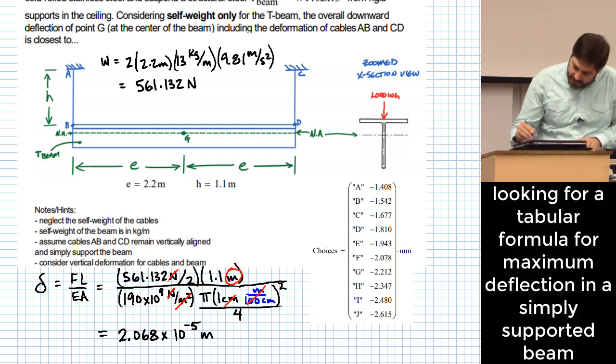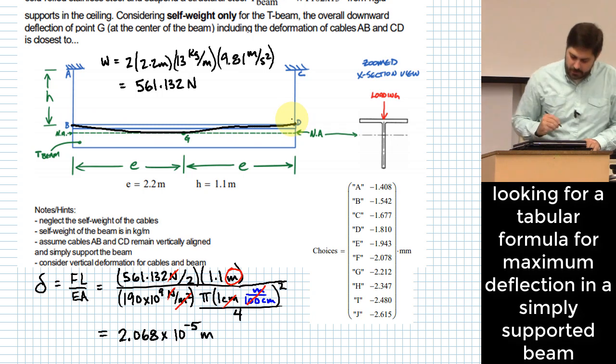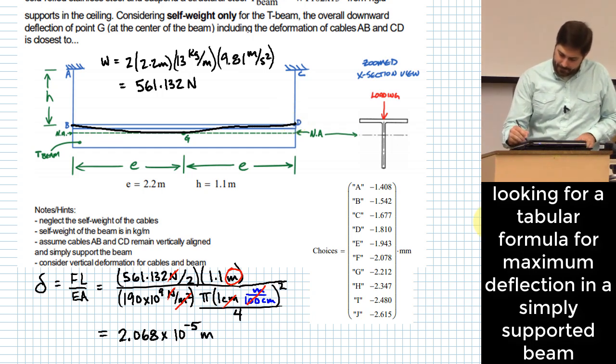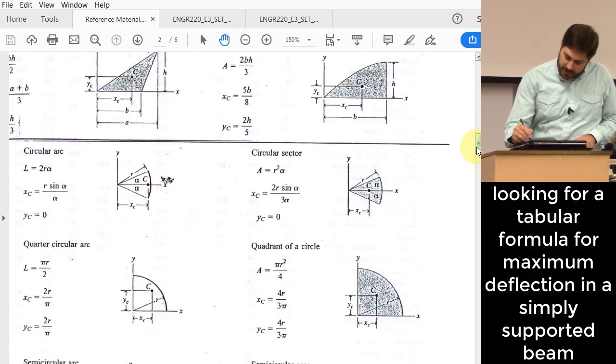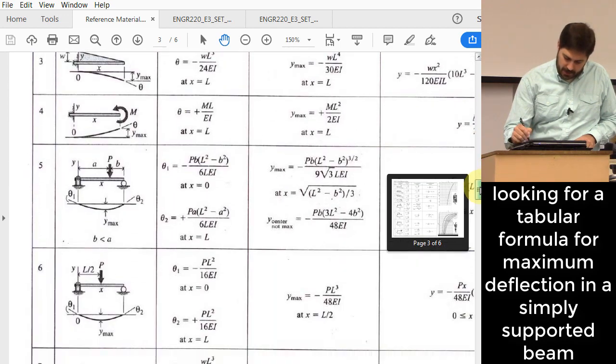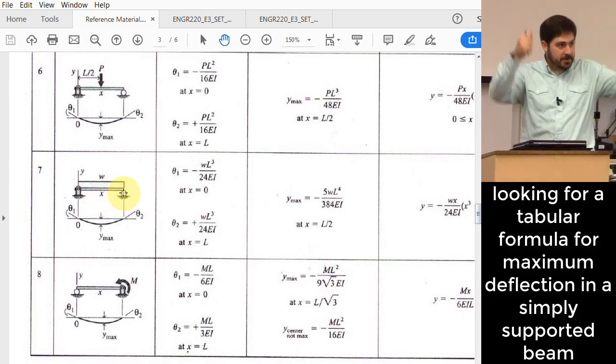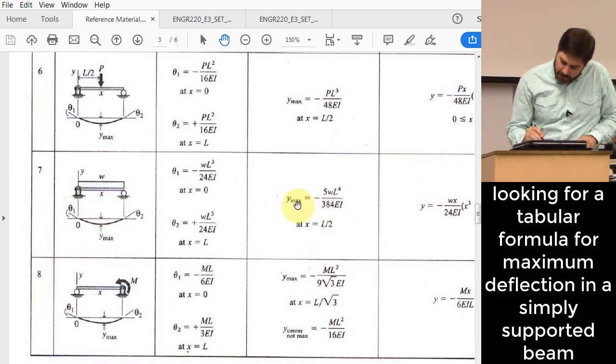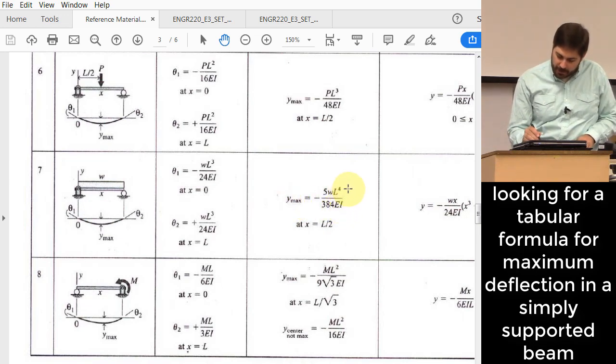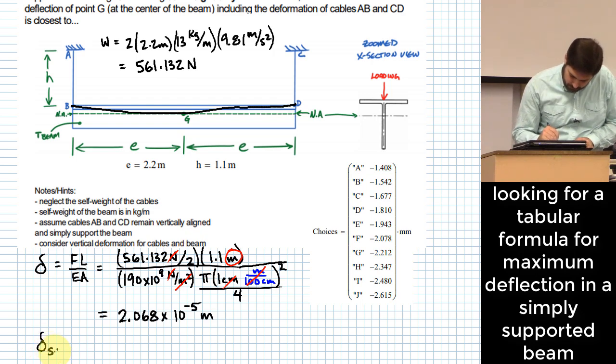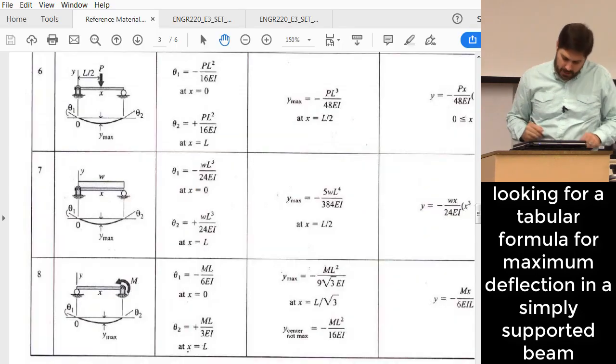Now what we want to do is add to that the effect that this beam is going to sag in the middle because it's got its own self weight, right? So how do I deal with that? I go shopping, right? I go shopping in my beam deflection table. Okay, I go back to my distributed force, right? For a simply supported beam, which is what it happens if you hang it from cables like this. And what I'm going to do is figure out what this maximum deflection is here at the middle. 5WL to the fourth, okay, over 384EI. 5WL to the fourth over 384EI. Did I remember that correctly? Yes. Okay.